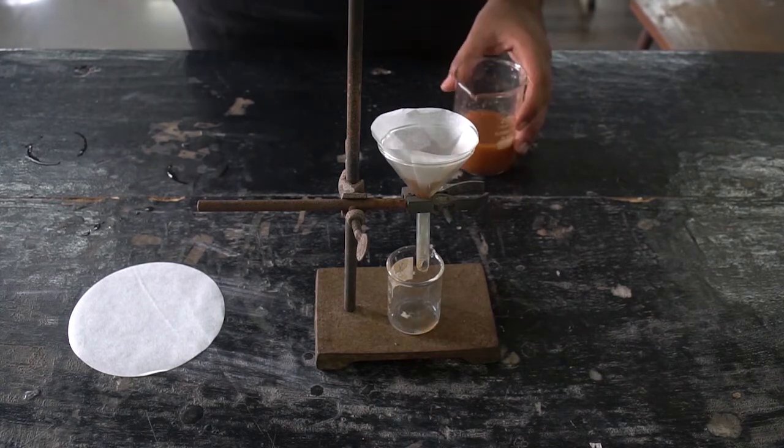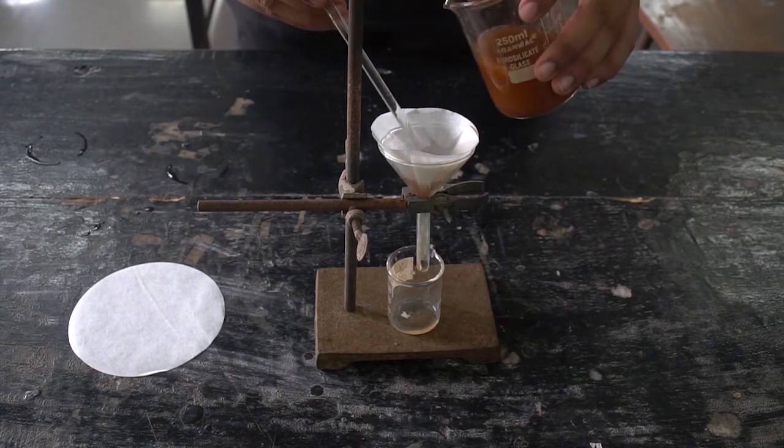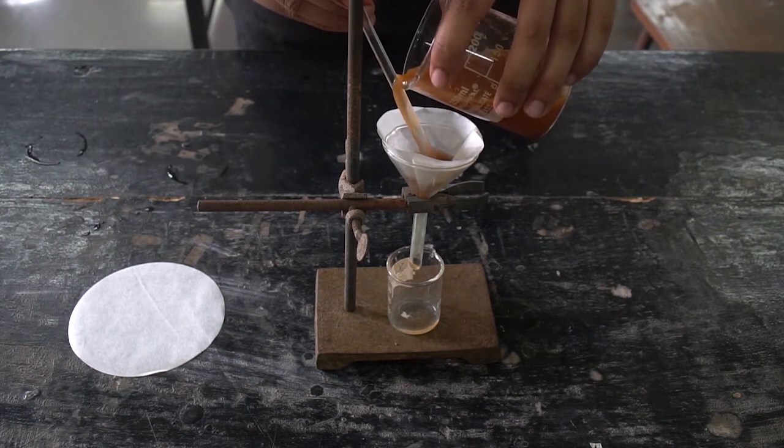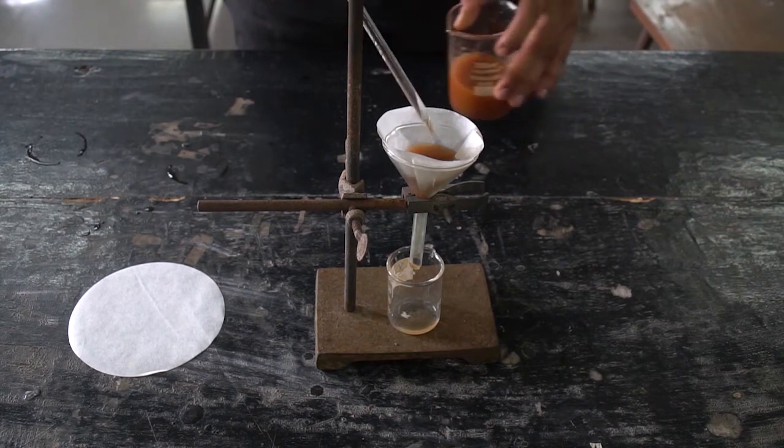Then we can use a technique which helps us pour the muddy water easily, that is to pour it over the glass rod into the filter paper. This avoids any spillage.